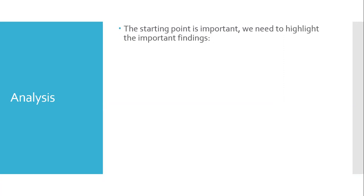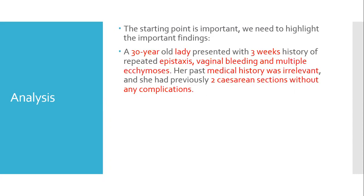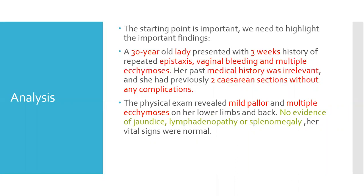First of all, we need to highlight the important findings in the case. Returning to the history, the important findings highlighted are: a 30-year-old lady, three-week history of epistaxis, vaginal bleeding, and multiple ecchymosis. The past history was irrelevant, and she had two caesarean sections without significant bleeding. Physical examination showed mild pallor and multiple ecchymosis. The important negative findings are no evidence of jaundice, no lymphadenopathy, and no splenomegaly. Vital signs were normal.